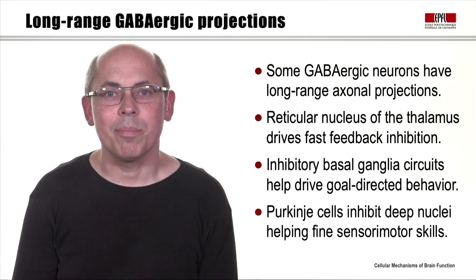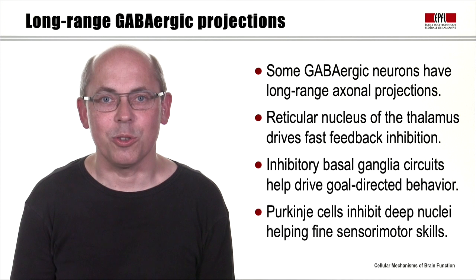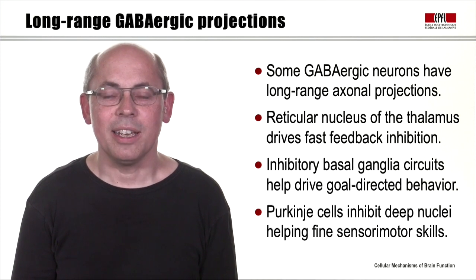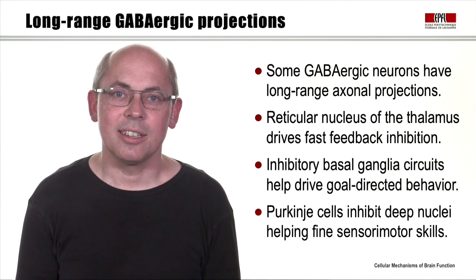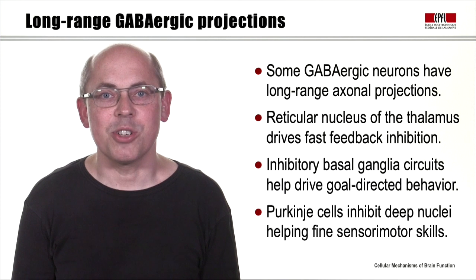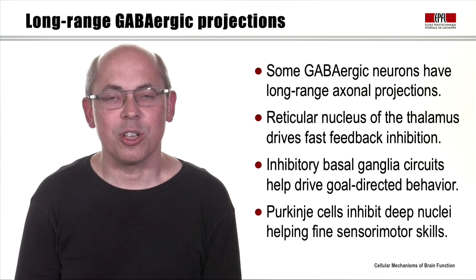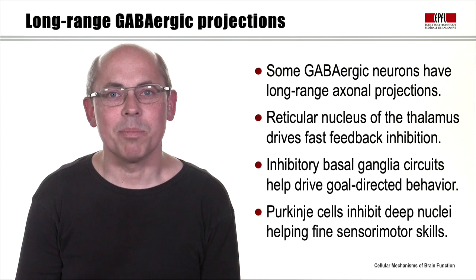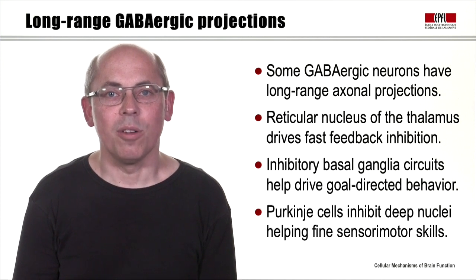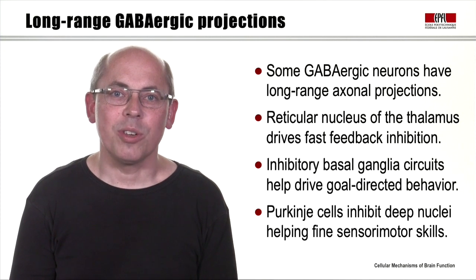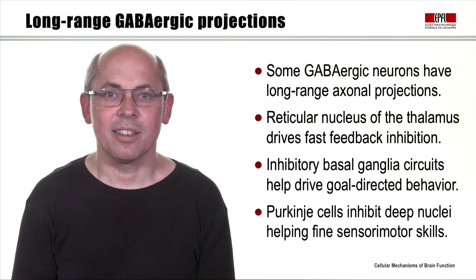In this video, we've seen that some GABAergic neurons have long-range axonal projections. We considered three types: thalamic reticular neurons, which provide feedback inhibition in the sensory thalamus and play a role in gating and filtering sensory information relayed to the neocortex; the GABAergic striatal projection neurons of the basal ganglia that inhibit the substantia nigra and are involved in goal-directed motor control; and the GABAergic Purkinje cells, the sole output neurons of the cerebellum, which inhibit the deep cerebellar nuclei and are involved in fine-tuning motor action. Not only long-range excitatory neurons, but also long-range GABAergic neurons play a significant role in governing the action of the mammalian brain.